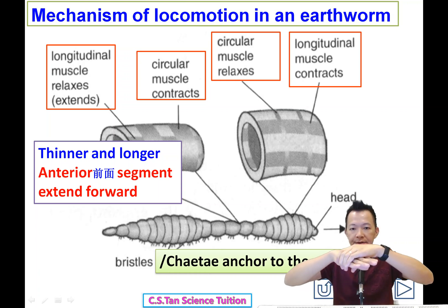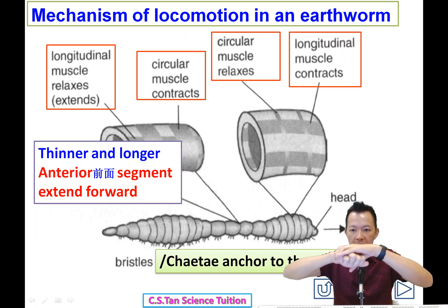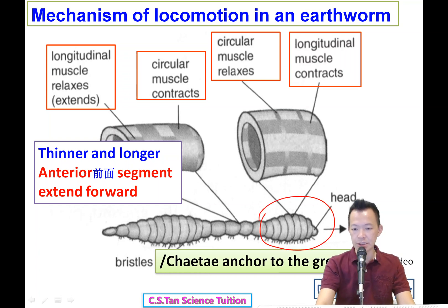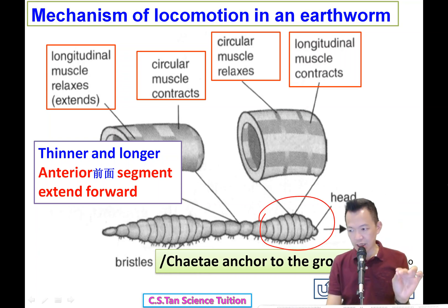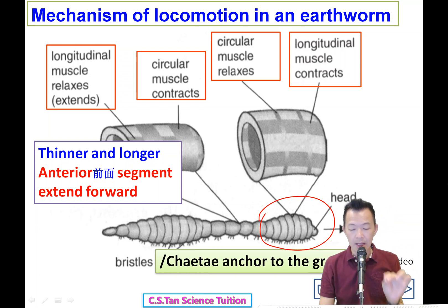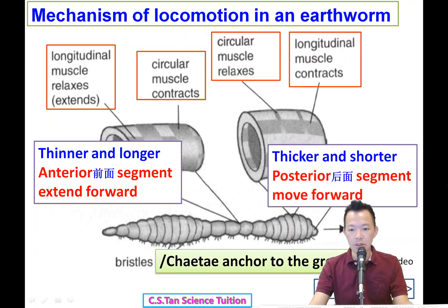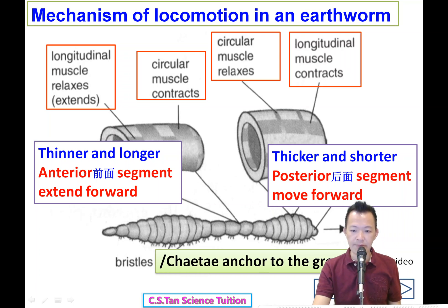The circular muscle relaxes and the longitudinal muscle contracts, so the earthworm's body becomes shorter and thicker. As a result, the posterior segment moves forward.